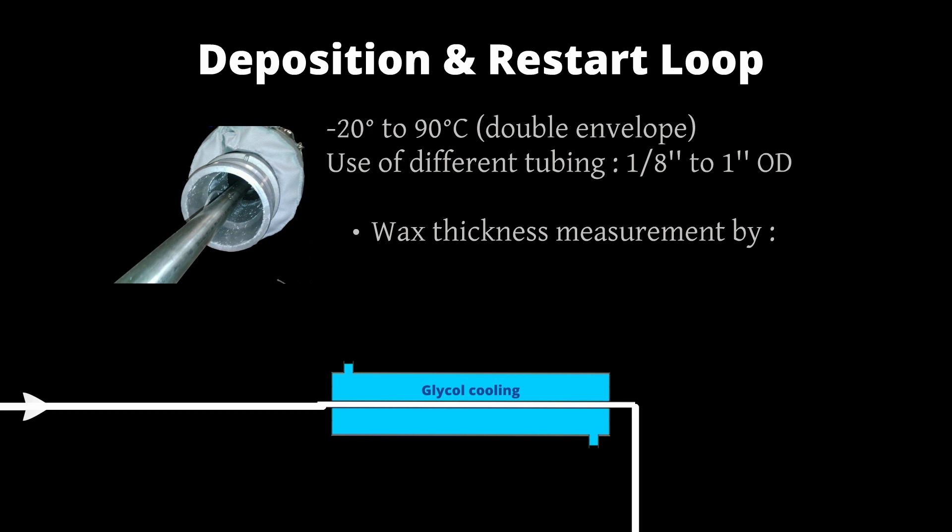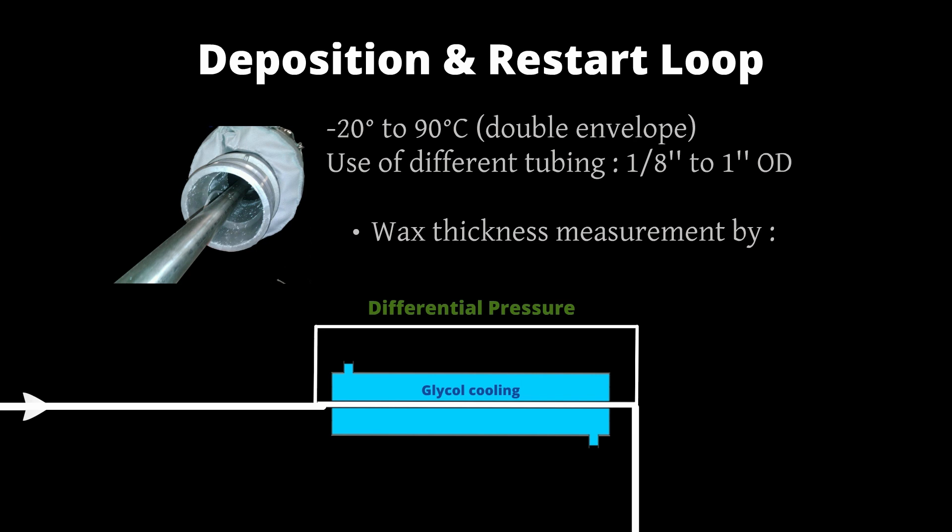The picture shows the 1 inch OD configuration with the cooling jacket and the insulating blanket. The wax thickness is calculated from two methods. First, the pressure drop method is based on the concept that wax deposition reduces the hydraulic diameter of the flowing fluid inside the pipe, resulting in an increase of pressure drop along the pipe. The heat transfer method: as the deposit grows it reduces the heat transfer between the oil and glycol. This added thermal resistance is approximately in direct proportion with the thickness of the wax layer. In other words, the difference between a clean pipe and a dirty pipe is calculated in terms of heat balance.